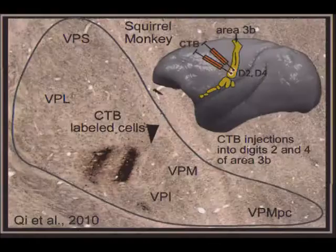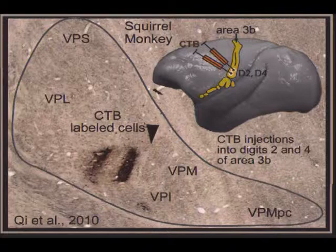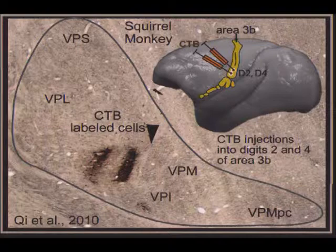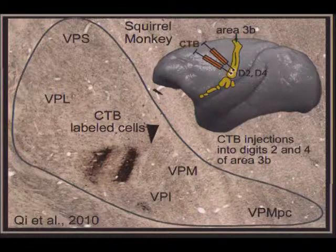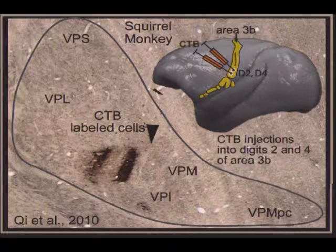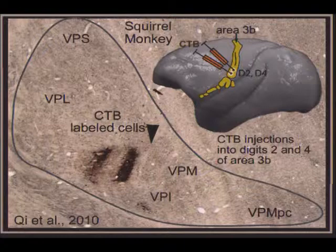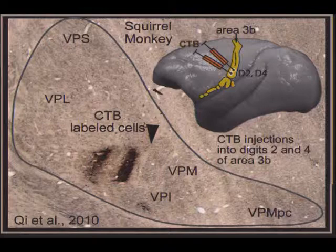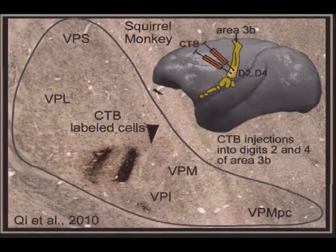Those cortical subdivisions are based on complete segregation of inputs from the thalamus, which are based on complete segregation of inputs from the cuneate nucleus, which are based on complete segregation of inputs from the different digits — segregated at all those levels. To show that segregation at the level of the thalamus, two digit regions — digits two and four — are physiologically identified and injected with tracers, and you see two separate bands in the ventral posterior nucleus. The connections are highly segregated in development, creating groups of cells at all levels.